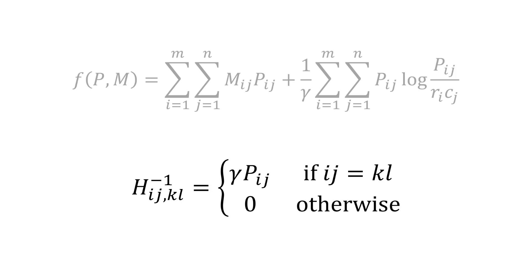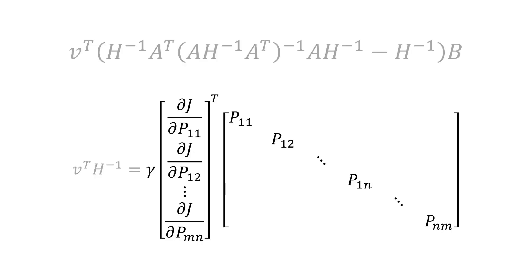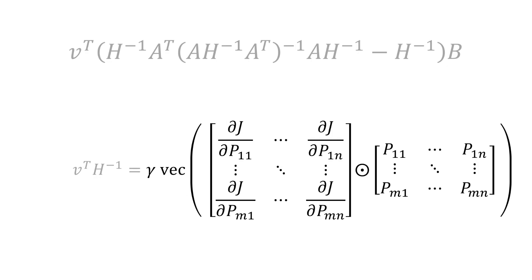Moreover, multiplication by H inverse simply scales corresponding entries by gamma p_ij, which we write succinctly as gamma times p arrow. Computing v transpose H inverse in vectorized form would look as shown. However, we can perform the same operation keeping our representation in matrix form by calculating an element-wise product. So we have a very efficient way of multiplying by H inverse.